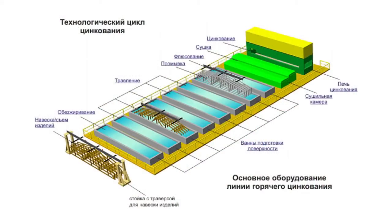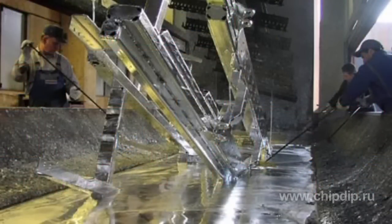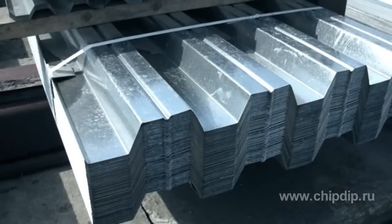Galvanization is the application of zinc or its alloys to a metal product to give its surface certain physical chemical properties, including, first of all, high corrosion resistance. Galvanization is the most popular and cost-efficient metallization process used for protecting iron and its alloys from atmospheric corrosion. About 40% of the world's extraction of zinc is used for these purposes.